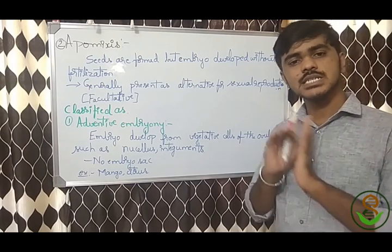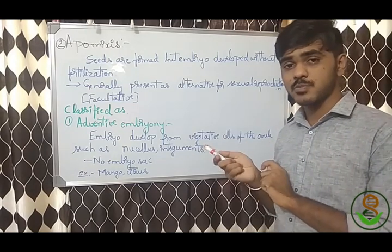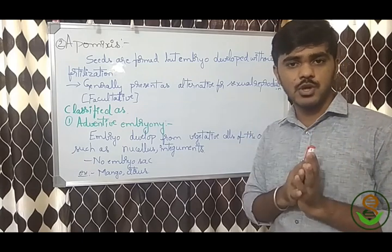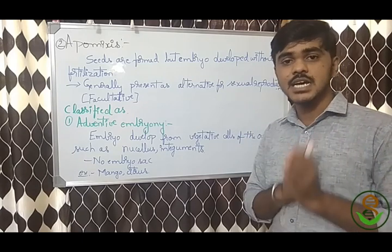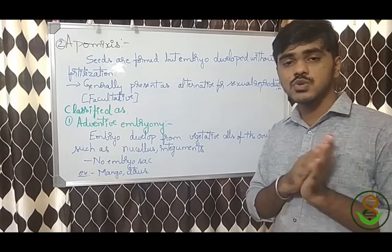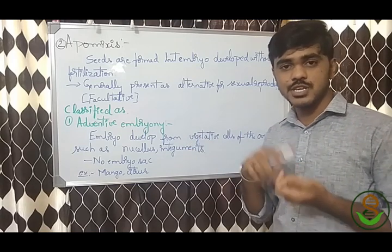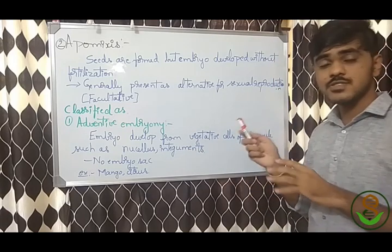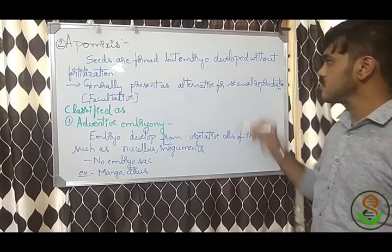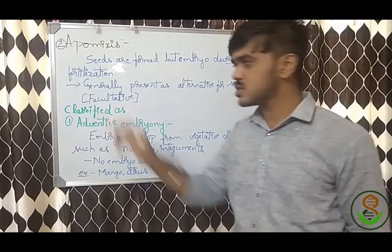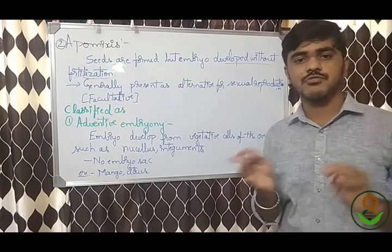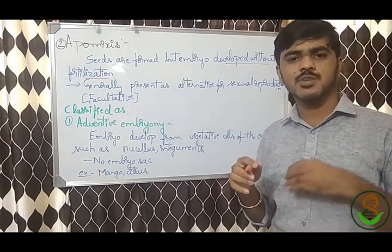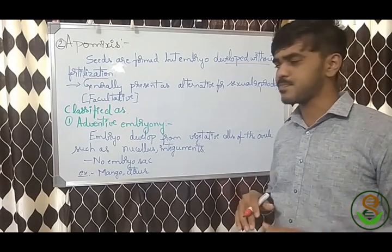In apomixis, seeds develop from an embryo, but the embryo is not from a zygote formed by the fusion of male and female gametes. It develops without fertilization, directly from the reproductive parts. In pure apomictic species, sexual reproduction is absent. But normally apomixis is present as an alternative — in a facultative manner — alongside sexual reproduction.